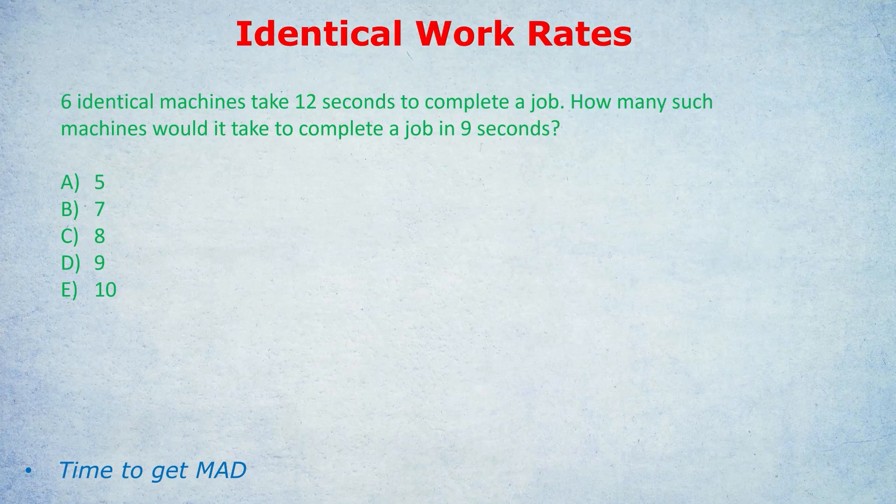Get your notebooks ready because this is one of the best tricks I haven't yet covered on my channel — one of my personal favorites that I can almost guarantee you're going to love. It's to do with identical work rates. We're going to have four examples today. The question is: six identical machines take 12 seconds to complete a job. How many such machines would it take to complete a job in nine seconds?